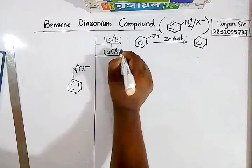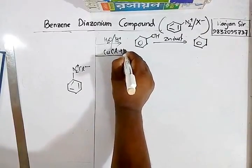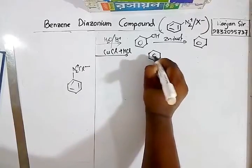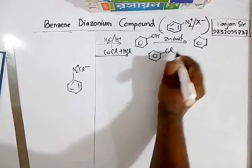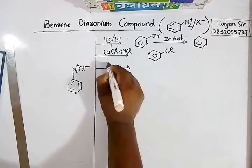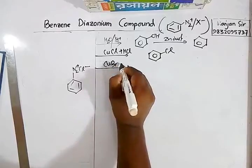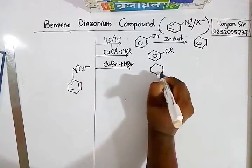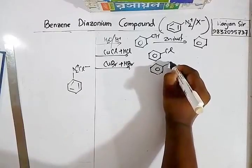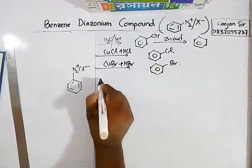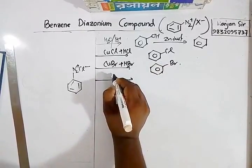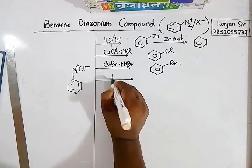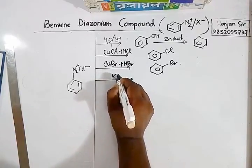If benzene diazonium chloride is treated with CuCl in the presence of HCl medium, you get chlorobenzene. In a similar reaction, if you add CuBr along with HBr, you get bromobenzene.